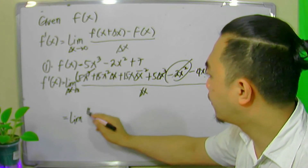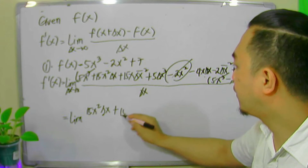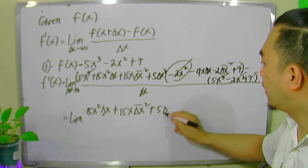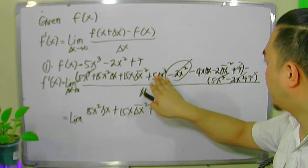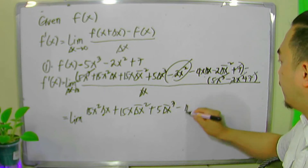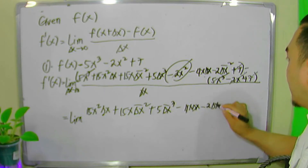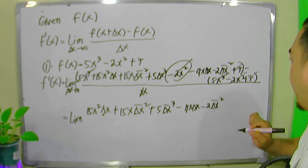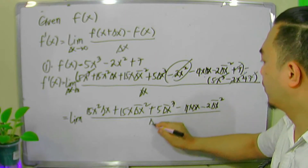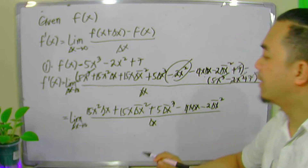What is left in the numerator is: 15x squared delta x plus 15x delta x squared plus 5 delta x cubed, minus 4x delta x minus 2 delta x squared. All over delta x, as delta x approaches zero.